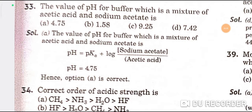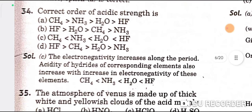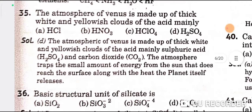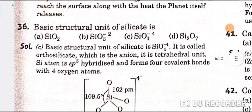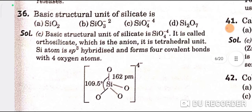Question 3: The pH value for a buffer which is a mixture of acetic acid and sodium acetate is 4.75 — A is the correct option. Question 4: The correct order of acidic strength is CH4, NH3, H2O, then HF — C is the correct option. Question 5: The atmosphere of Venus is made up of thick white and yellowish clouds mainly of H2SO4 — D is the correct option.